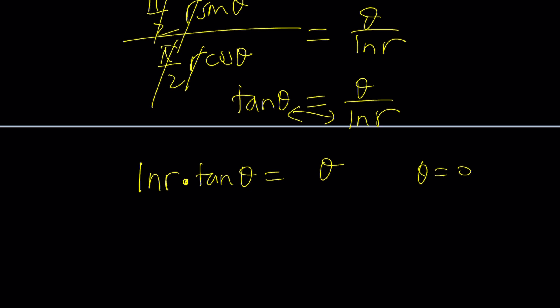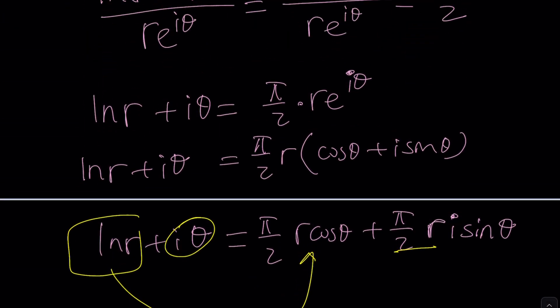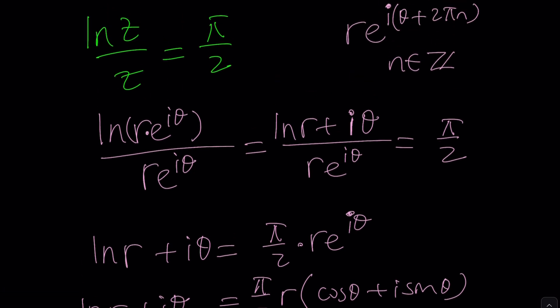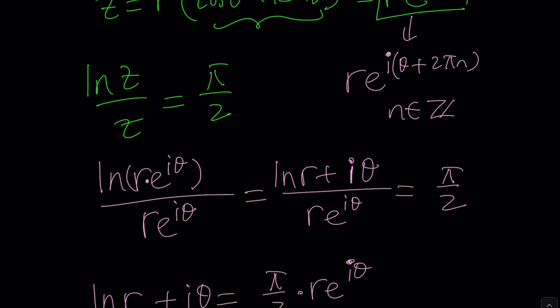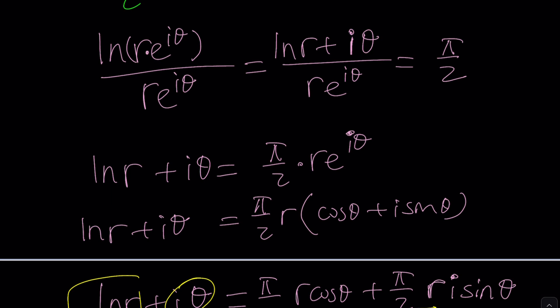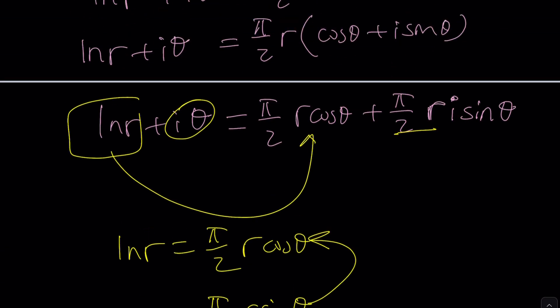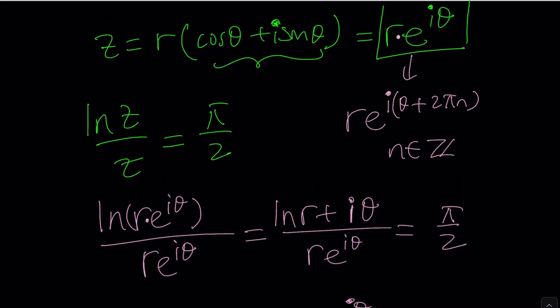If θ equals 0, then we kind of have a problem because if θ is 0, actually, we don't really have a problem. We're going to end up with ln R over R, but R is real, so I don't think that's going to work. But anyways, at least I tried. I was hoping to get something out of this, but it didn't work.